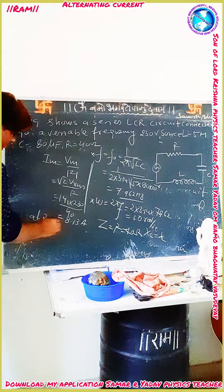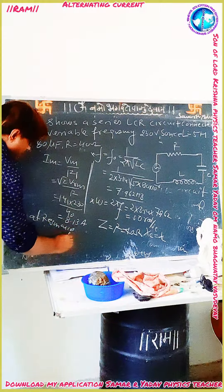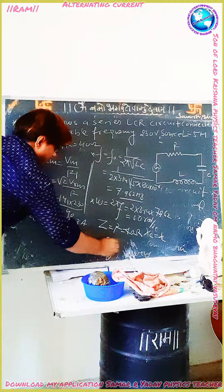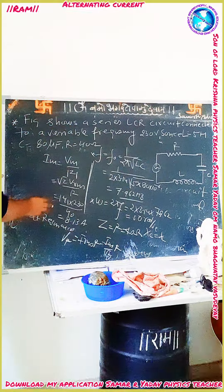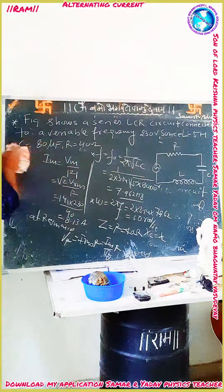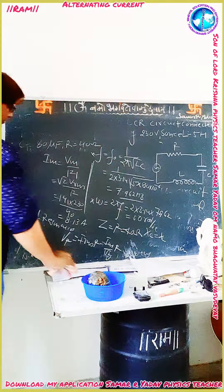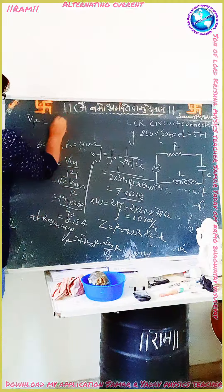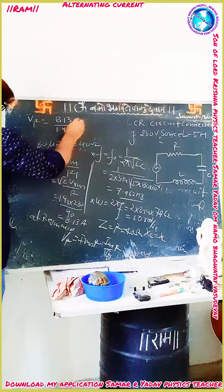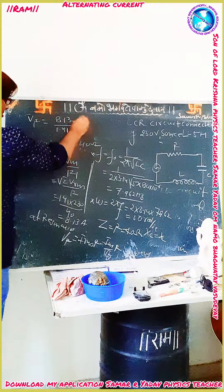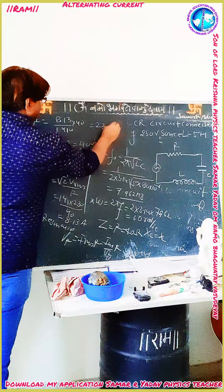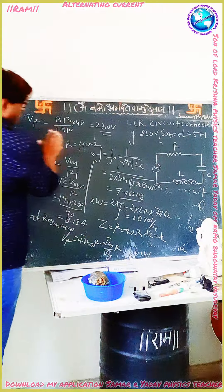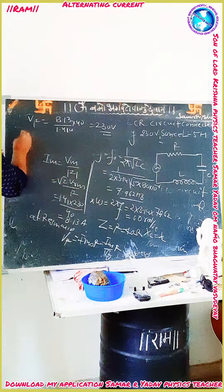Now the potential drop across R: Vr is equal to Irms × R, which equals Im upon root 2 into R. Im is 8.13, divided by root 2 (1.414) into 40. Solving this, we get Vr equal to 230 volt.